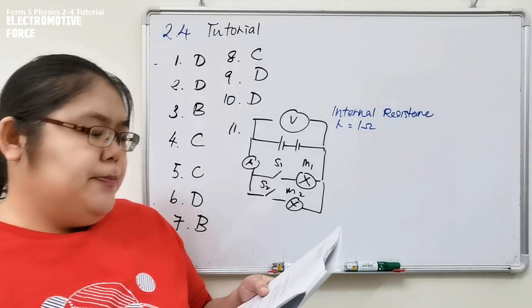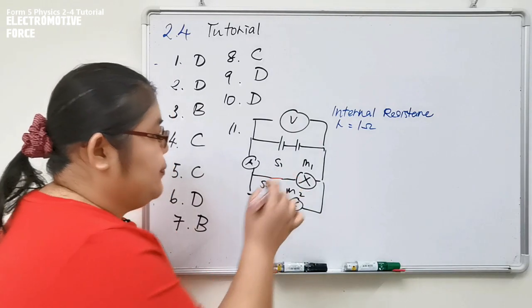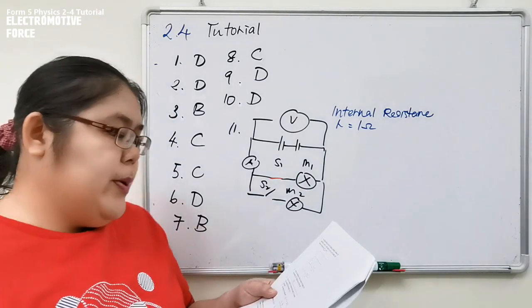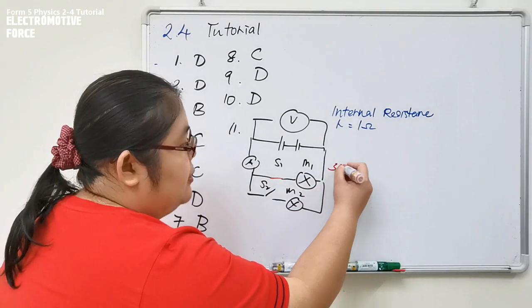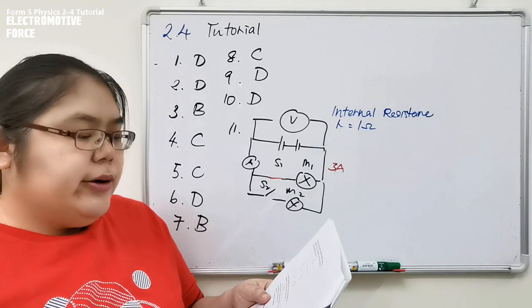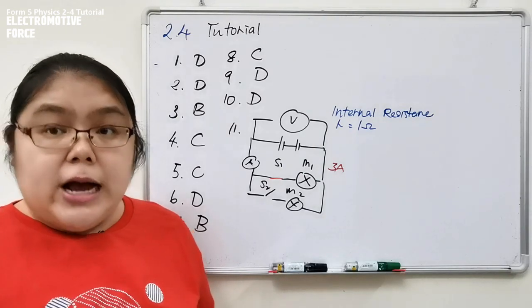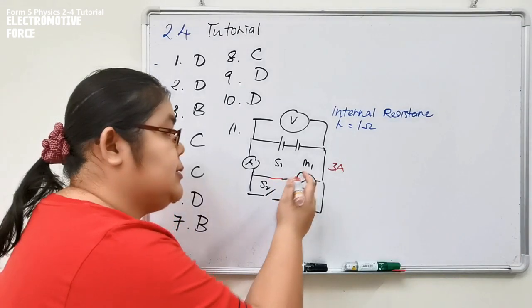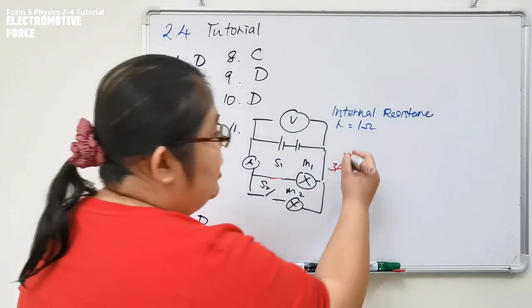Then we go to B. When S1 is closed, S2 is still open, the reading of the voltmeter now becomes 3 ampere. When you close S1, the current is 3 ampere. The reading of the voltmeter is how many? That means now the voltmeter reading is the potential difference reading for this resistor. So we're using V equals IR.